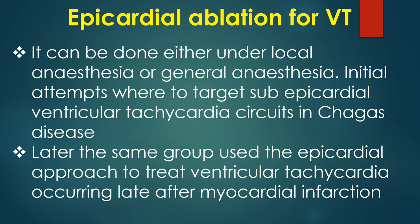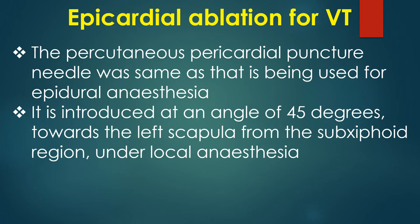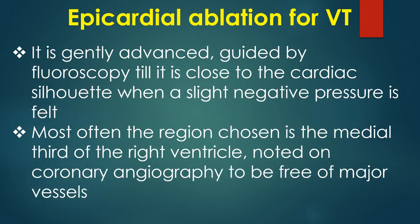The same group later used the epicardial approach to treat ventricular tachycardia occurring late after myocardial infarction. The percutaneous pericardial puncture needle is the same as that used for epidural anesthesia. It is introduced at an angle of 45 degrees towards the left scapula from the subxiphoid region under local anesthesia, and gently advanced guided by fluoroscopy till it is close to the cardiac silhouette when a slight negative pressure is felt. The region chosen is typically the medial third of the right ventricle, noted on coronary angiography to be free of major vessels.